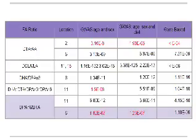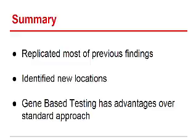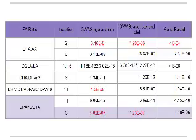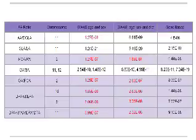In summary, with the new GWAS that incorporated dietary covariates, we replicated most of the previous findings and identified a few new locations, specifically with respect to the fatty acid ratios. We found that gene-based testing has advantages over standard approaches, particularly for fatty acid ratios, and we were better able to find significant chromosomal locations where these fatty acid ratios are encoded.